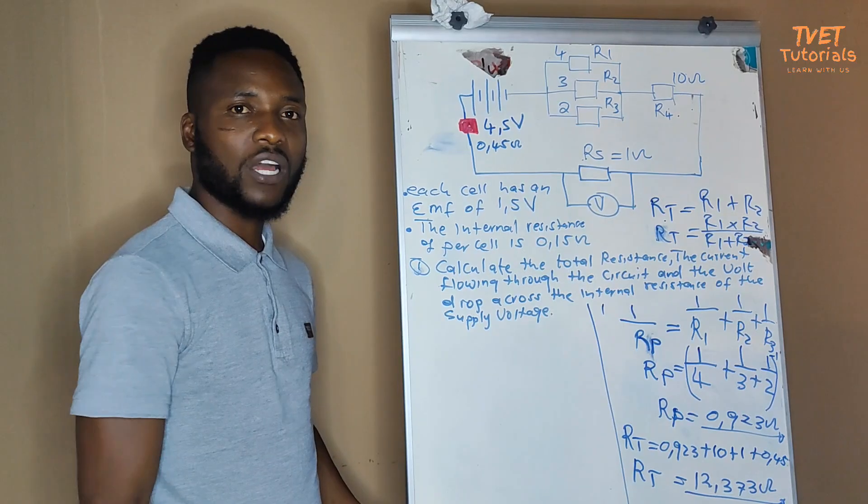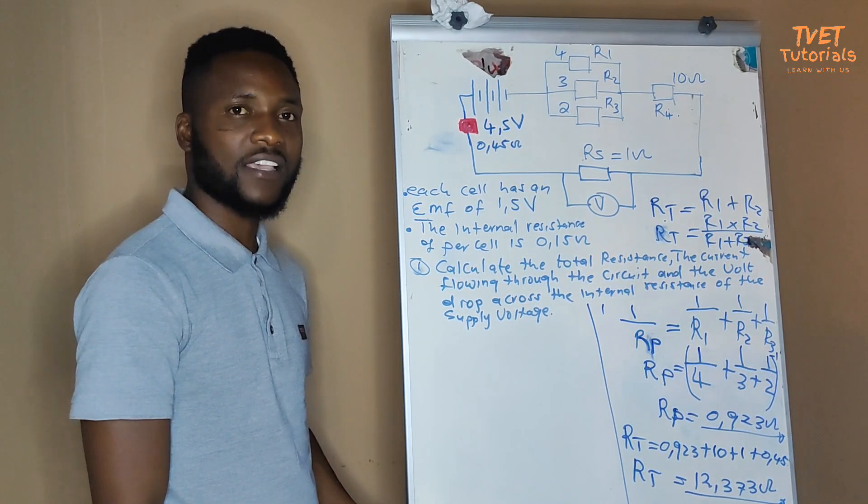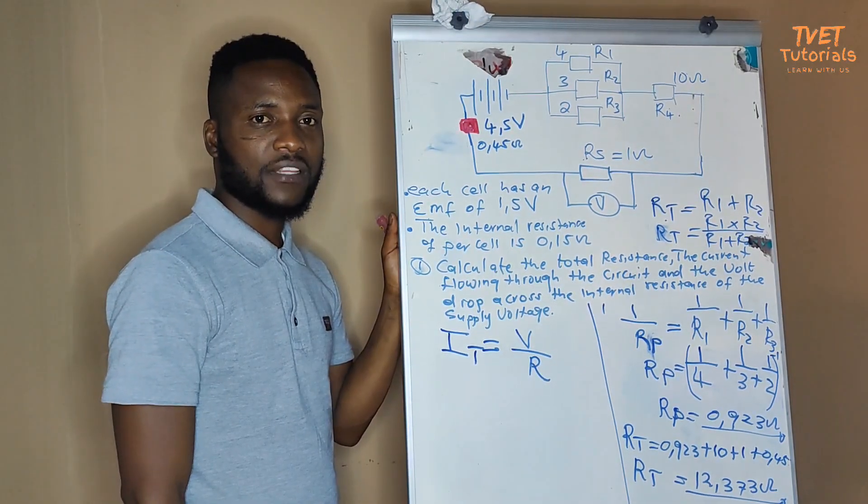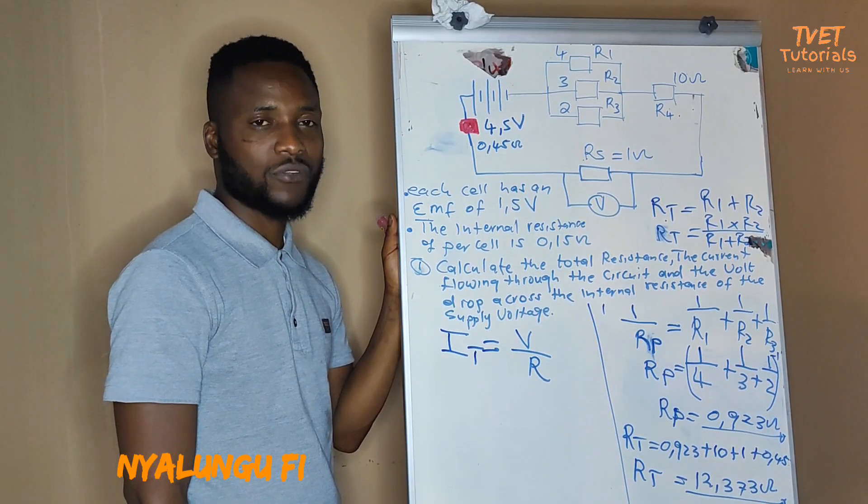So now, we are going to calculate the total current flowing across the circuit. To calculate the total current, we are going to apply Ohm's law.